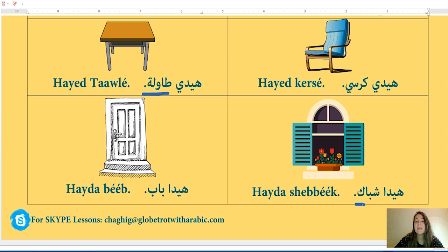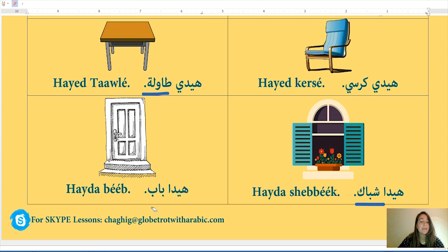Shibbeek (window): k'lme t shibbeek mu'annas ou muzakkar? Ma fi tey marboota — there is no tey marboota — so k'lme t shibbeek muzakkar. The word shibbeek (window) is masculine. Bebe (door): k'lme t bebe mu'annas ou muzakkar? K'lme t bebe muzakkar — the word door is masculine, because there is no tey marboota.